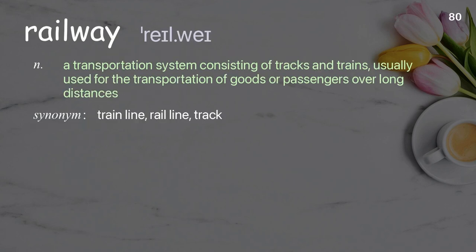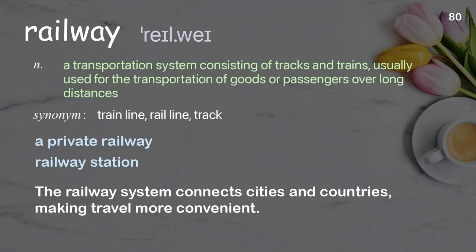Railway: A transportation system consisting of tracks and trains, usually used for the transportation of goods or passengers over long distances. Examples: A private railway, Railway station. The railway system connects cities and countries, making travel more convenient.